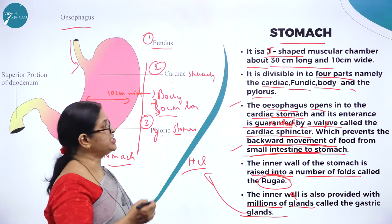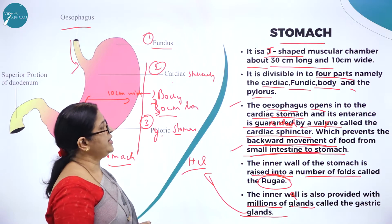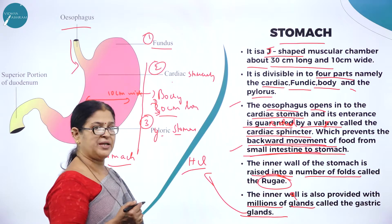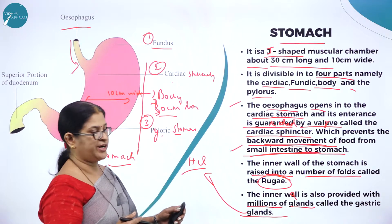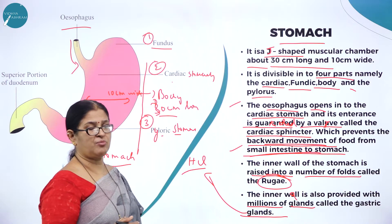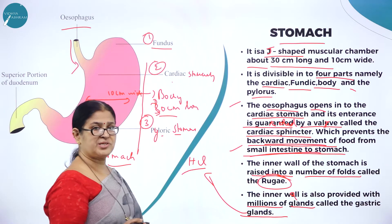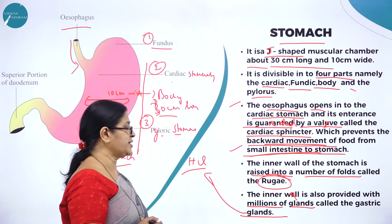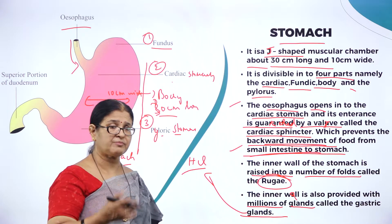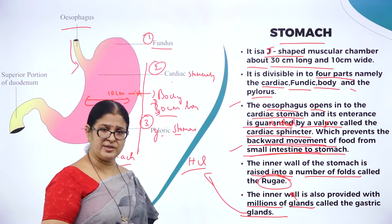To summarize the stomach: it is a J-shaped muscular chamber about 30 centimeters long and 10 centimeters wide. It is divisible into four parts — cardiac, fundus, body, and pylorus. The esophagus opens into the cardiac stomach and its entrance is guarded by the cardiac sphincter, which prevents backward movement of food from the small intestine to the stomach. The inner wall is raised into folds called rugae and is also provided with millions of gastric glands.